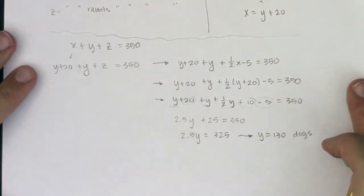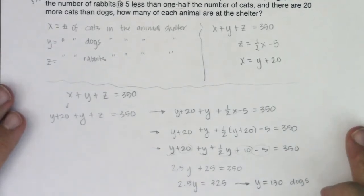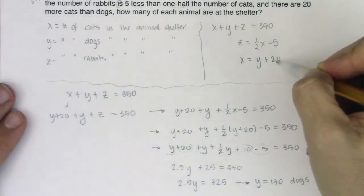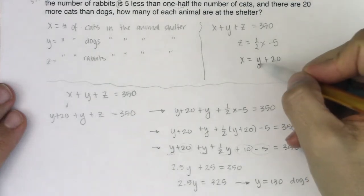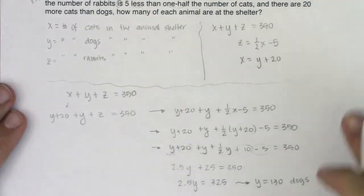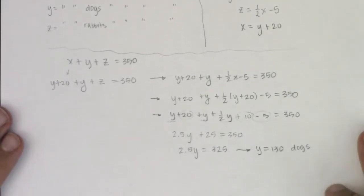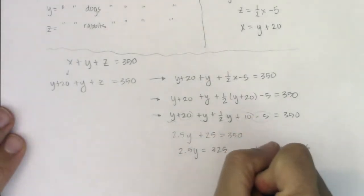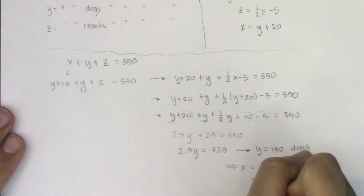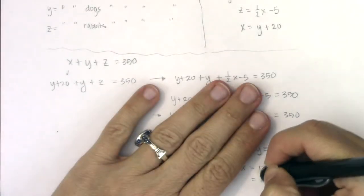From there, if I take a look at where we came from, if y is 130, I know x equals y plus 20. So I know that x is going to be 130 plus 20, which means I have 150 cats. So this implies that x equals 130 plus 20, which will be 150 cats.